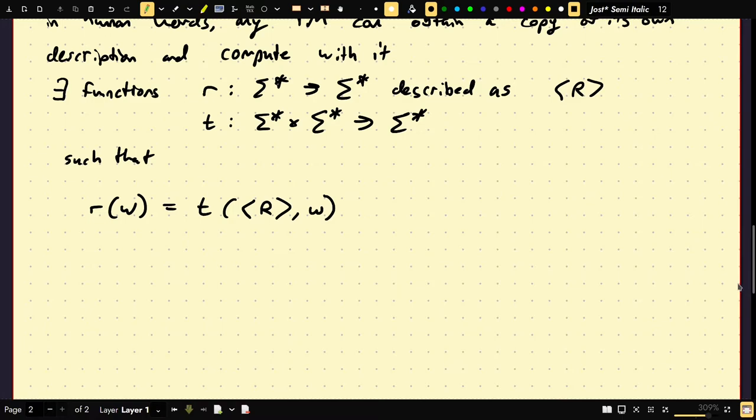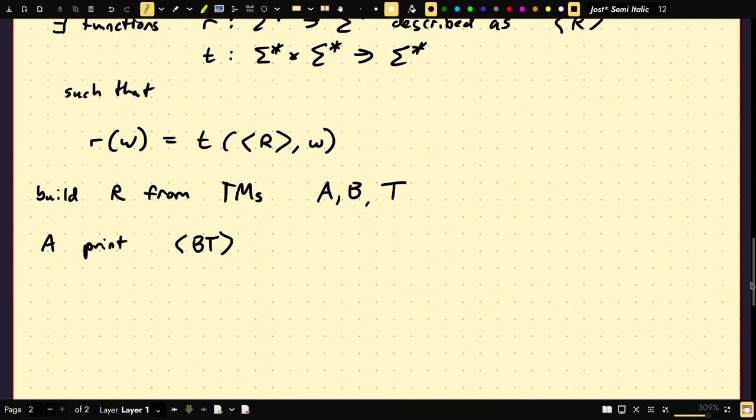We're going to construct Turing, we're going to construct R in three parts. So we're going to build R from a TMs A, B, and T. So A is going to print B, T. It's going to pass control to B.